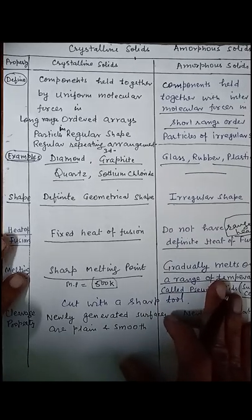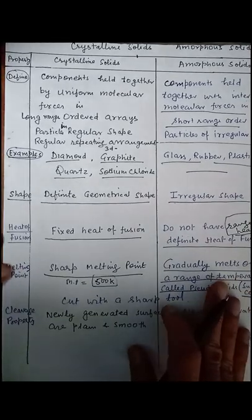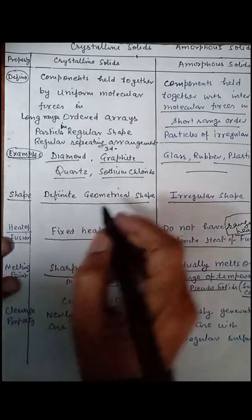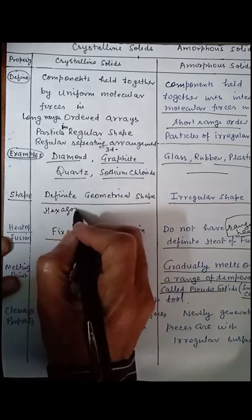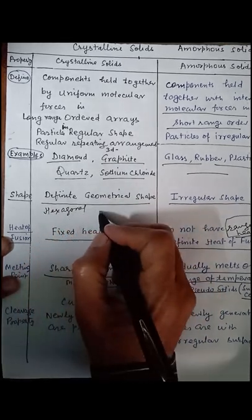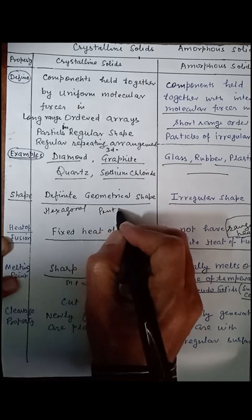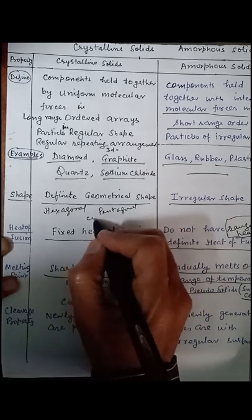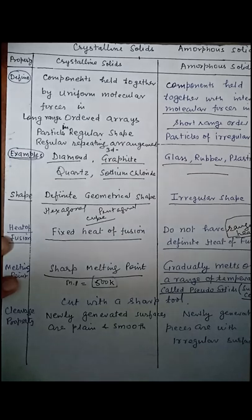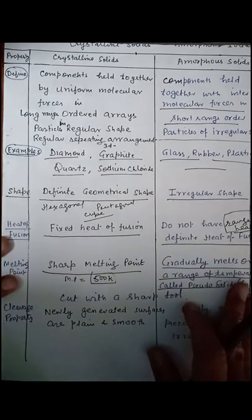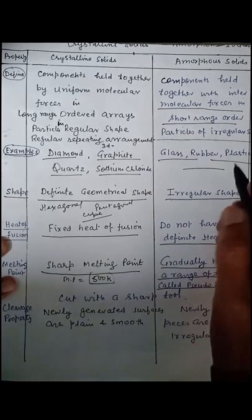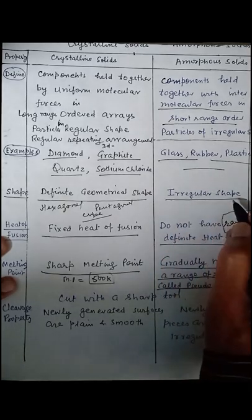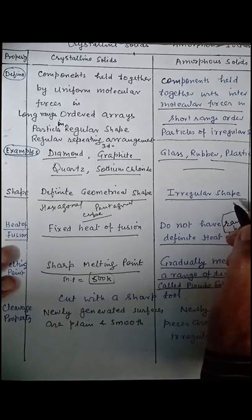Considering shape, crystalline solids have a definite geometric shape — they may be hexagonal, pentagonal, or cubic. In contrast, amorphous solids don't have any regular shape; they have an irregular shape.